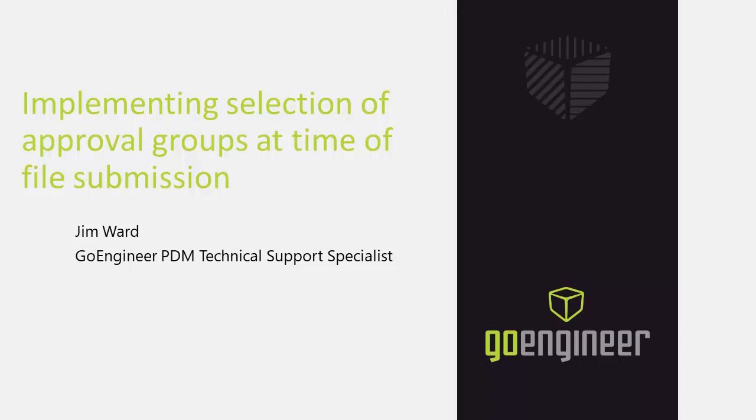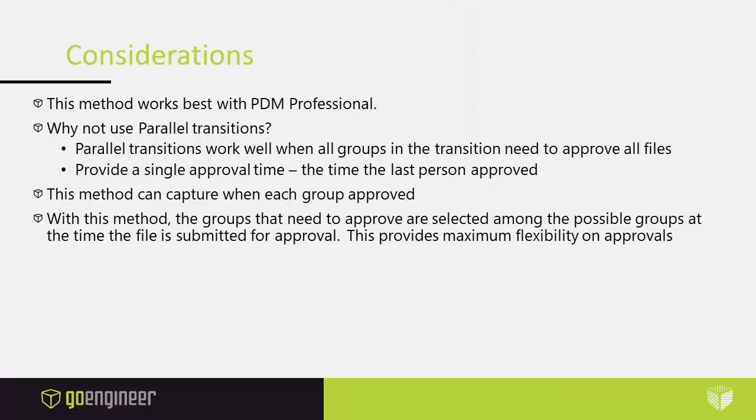This is useful when it is desired that the one submitting the file has control over which groups need to approve it. Now this method does work best with PDM Professional, because PDM Professional has automatic transitions, which PDM Standard does not. PDM Professional does have parallel transitions, so why not use parallel transitions for this? Parallel transitions work well when all the groups specified in the transition need to approve all files. But when you have different groups that you want to approve different files, then parallel transitions do not have that flexibility.